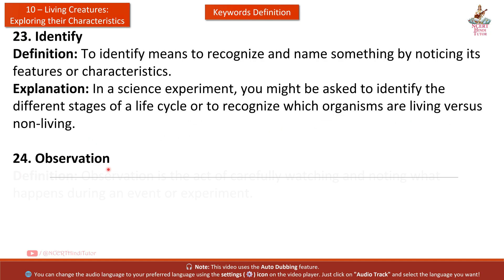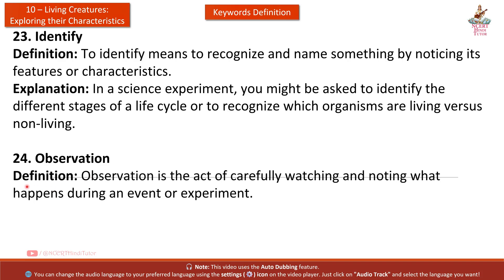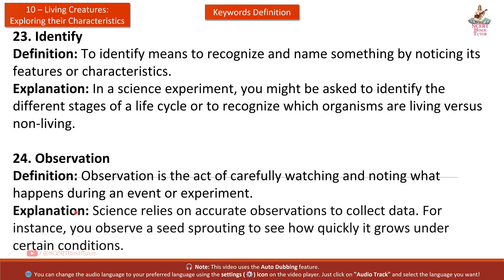Twenty-fourth: Observation. Definition: Observation is the act of carefully watching and noting what happens during an event or experiment. Explanation: Science relies on accurate observations to collect data. For instance, you observe a seed sprouting to see how quickly it grows under certain conditions.